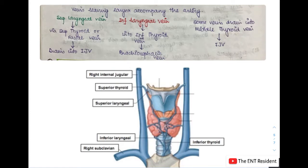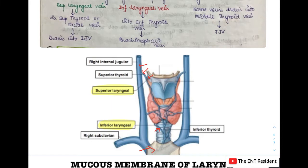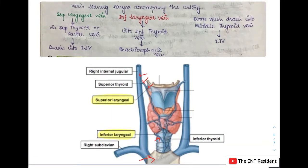The superior laryngeal vein drains via the superior thyroid vein or the facial vein into the internal jugular vein. The inferior laryngeal vein drains via the inferior thyroid vein ultimately into the brachiocephalic vein. Additionally, some veins can drain into the middle thyroid vein, which ultimately drains into the internal jugular vein. So in summary: the superior laryngeal vein drains into the internal jugular vein, the inferior laryngeal vein drains into the brachiocephalic vein, and some drain via the middle thyroid vein into the internal jugular vein.